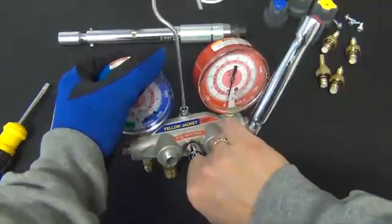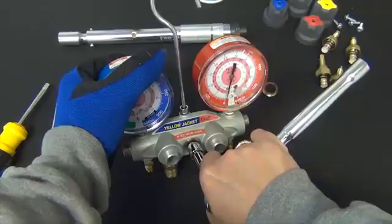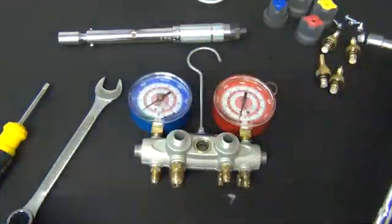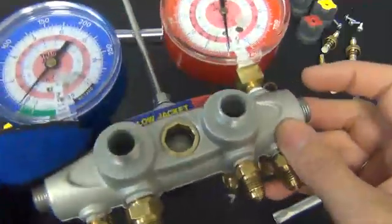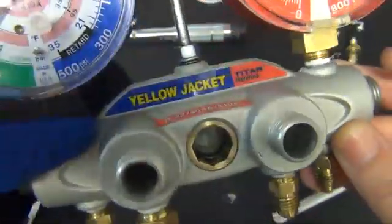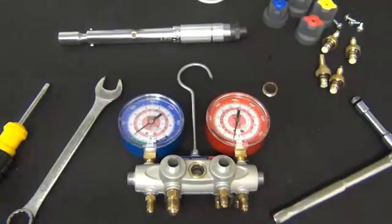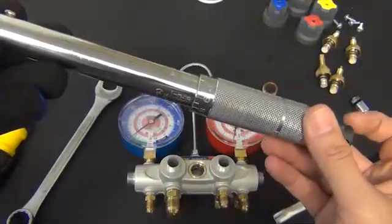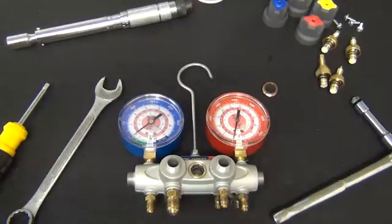Do not over tighten. This could cause the gasket to bulge. It just needs to be snug. If you have a torque wrench in our production line, we set our torque at 110 pounds per inch. Make sure the gasket stays flat. You will then have a good seal.